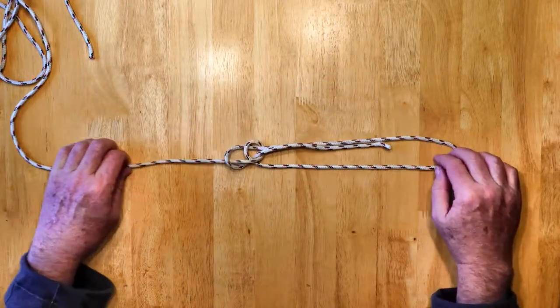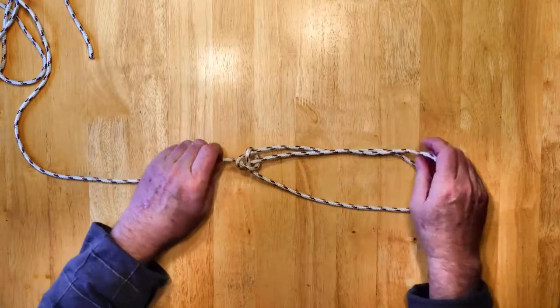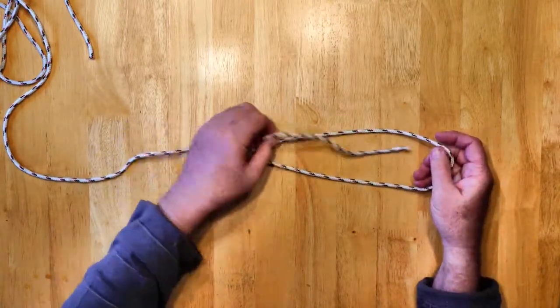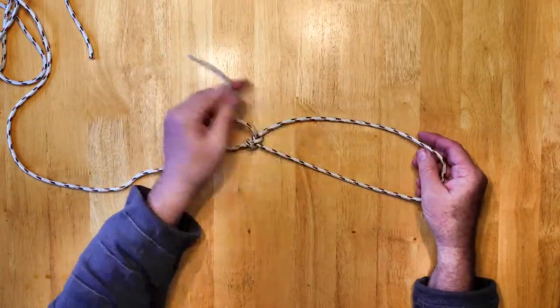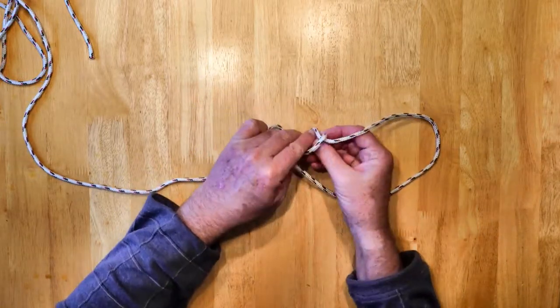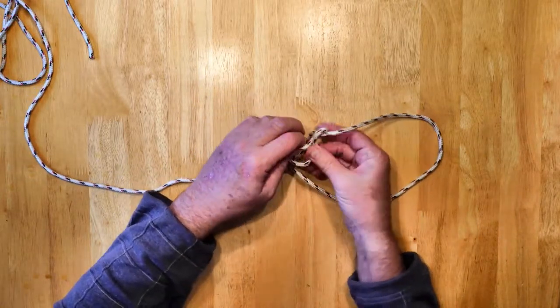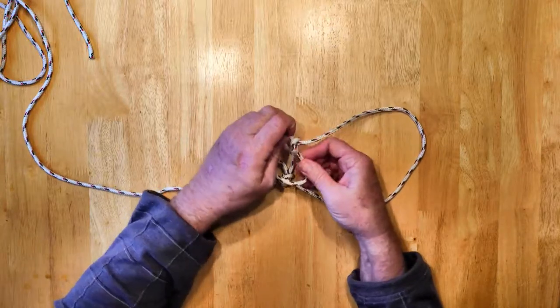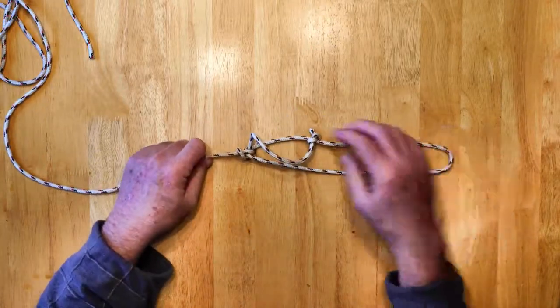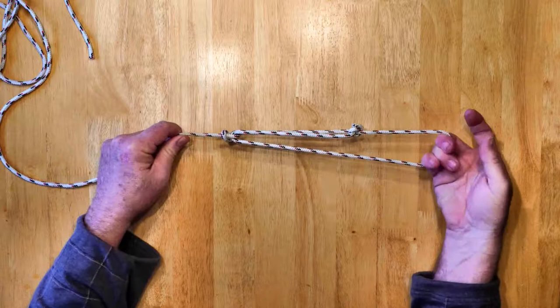And I'm just going to pull a bunch of excess in here to show you one other thing you can do with this knot. And that is, if you have a lot of excess and you don't want it flapping around, you can just put a simple overhand knot in the end of it to keep it from flopping around. And you can slide that up and down and kind of neaten it up.